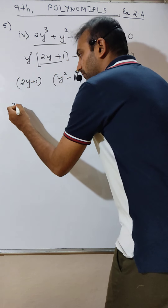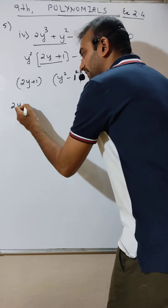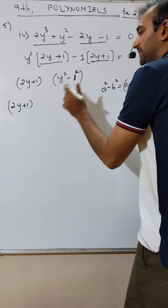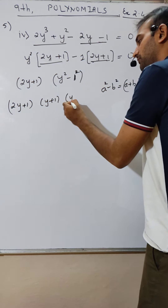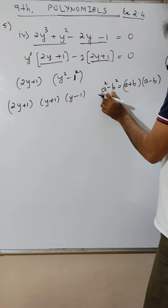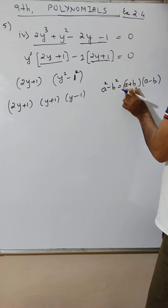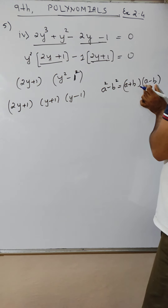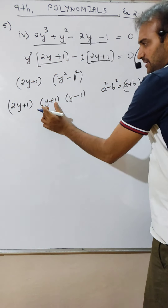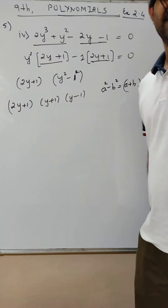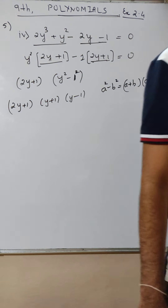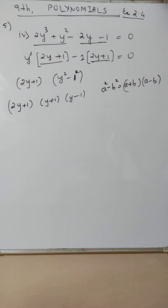So we have 2y plus 1, times y square minus 1 squared, which factors as 2y plus 1 times y plus 1 times y minus 1. a square minus b square equals a plus b times a minus b — ho gaya, it is done!